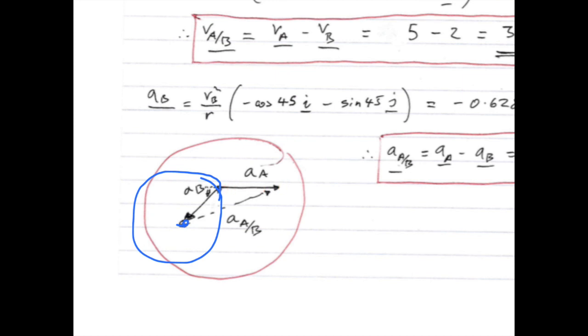This is the acceleration of B towards the centre of the circle, and this is the acceleration of A. This is in the car, moving, accelerating to the right. Now we superimpose these two vectors, and we're looking to find the acceleration of A with respect to B, so we're looking for the vector A slash B. And A slash B is going to be vector of A minus vector of B.